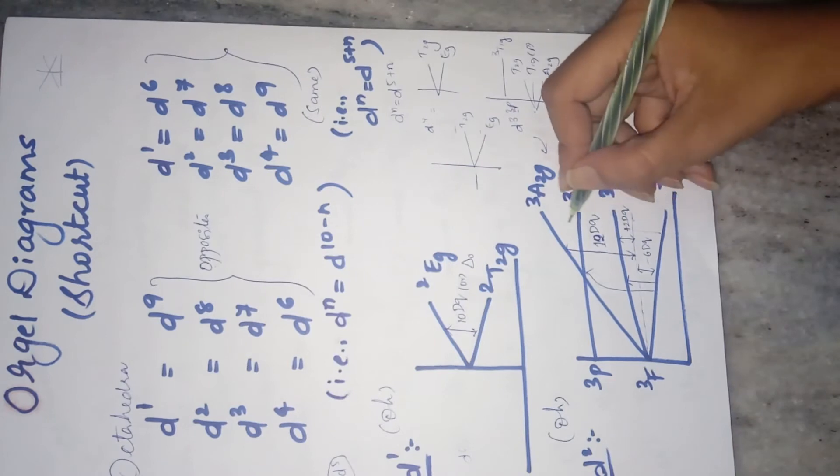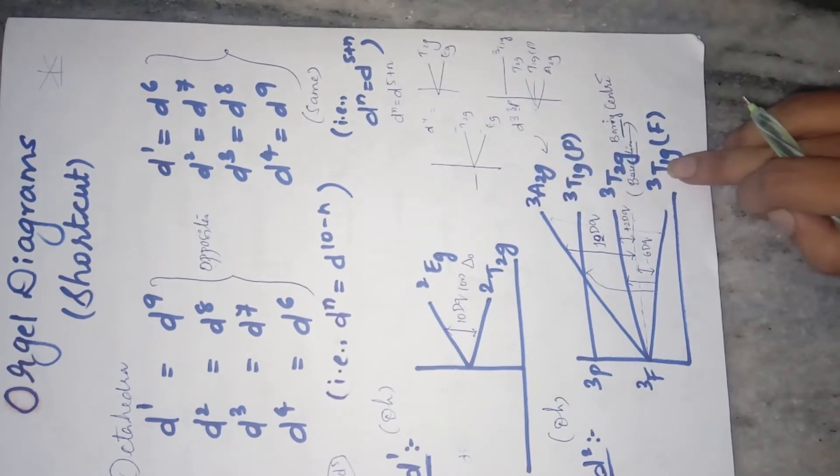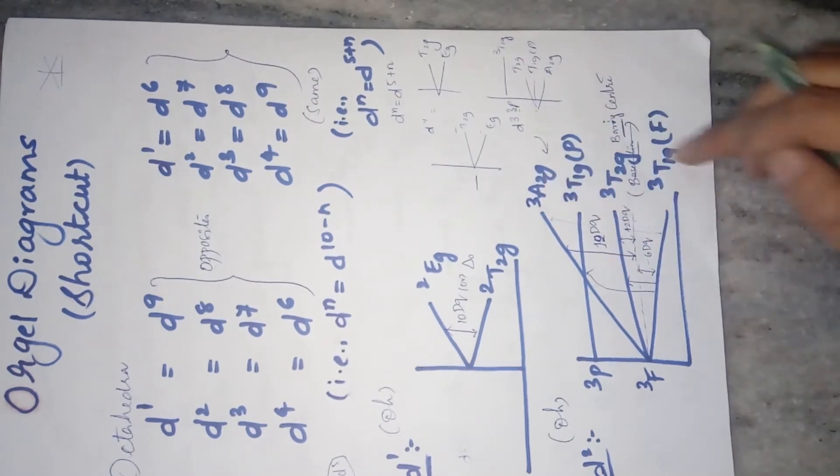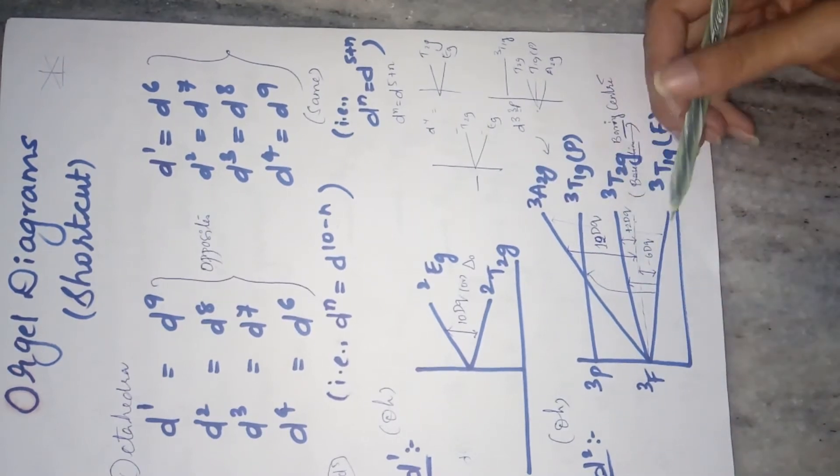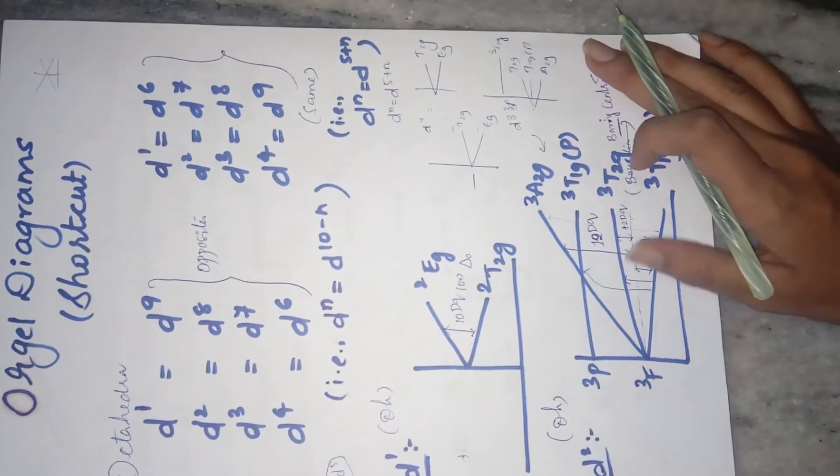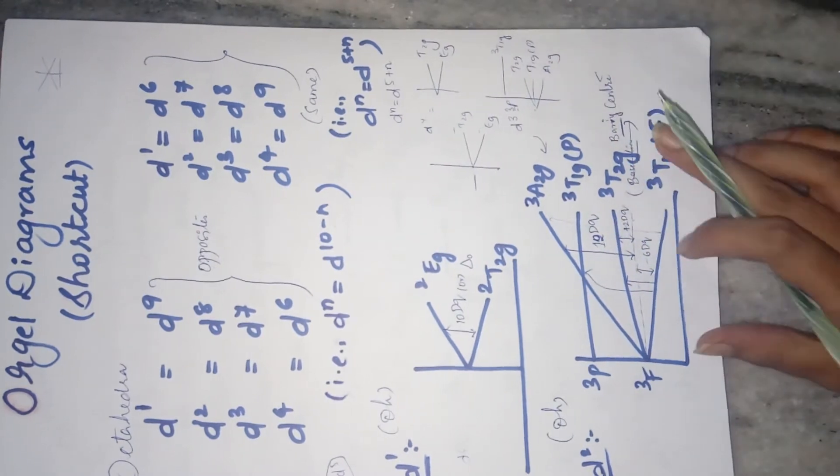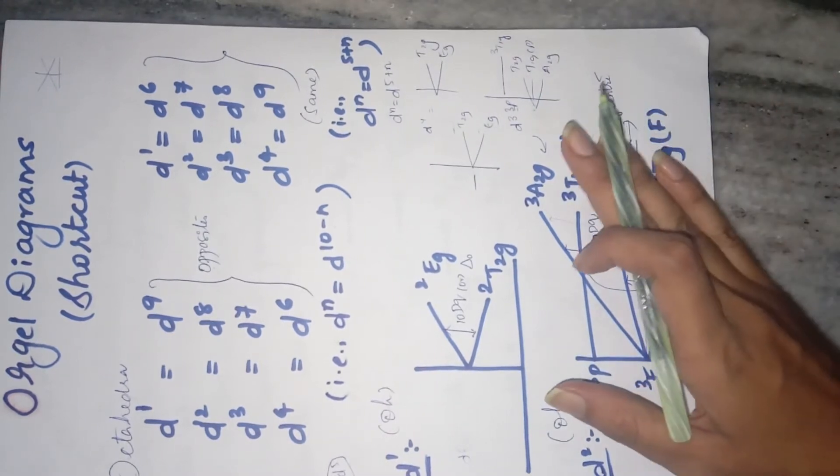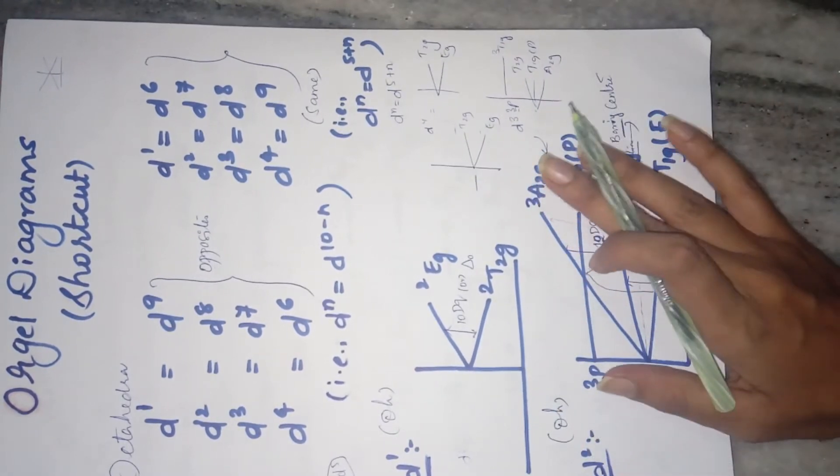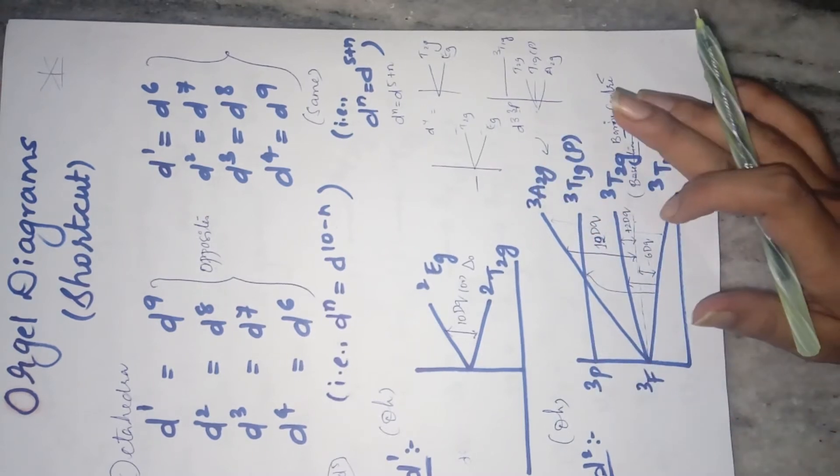The third transition is a forbidden transition because it is from T to A. So the different states, it is not allowed transition. Only when the states are same, it is possible transition. So there are only two possible transitions over here. If they ask you total number of transitions, you should write three. But if they ask you what are allowed transitions, then you should write only two transitions.